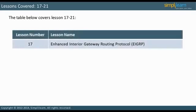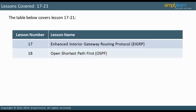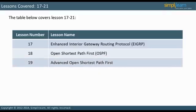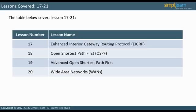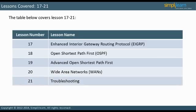Enhanced Interior Gateway Routing Protocol (EIGRP) is the topic for Lesson 17. Lesson 18 will discuss the Open Shortest Path First (OSPF) routing protocol, and Lesson 19 deals with advanced topics in OSPF, which is multi-area OSPF. The subject of Lesson 20 is Wide Area Networks (WANs). Lesson 21 will address troubleshooting.